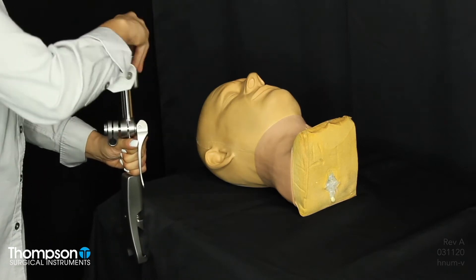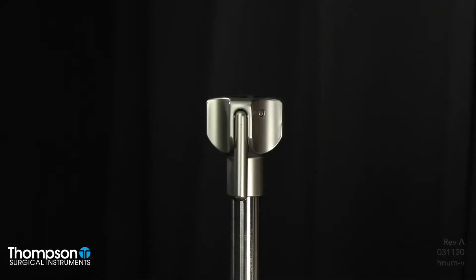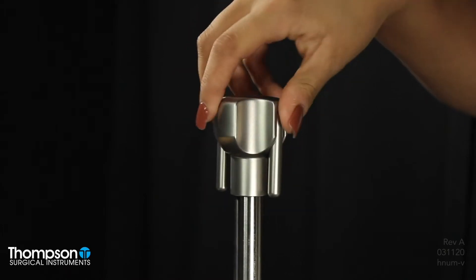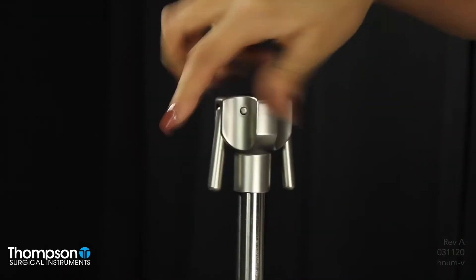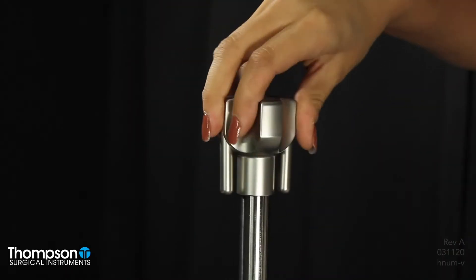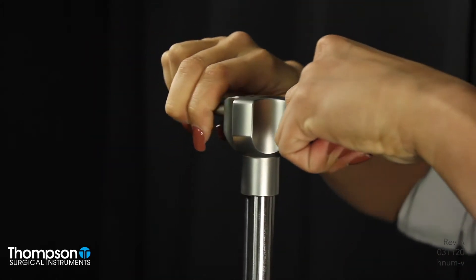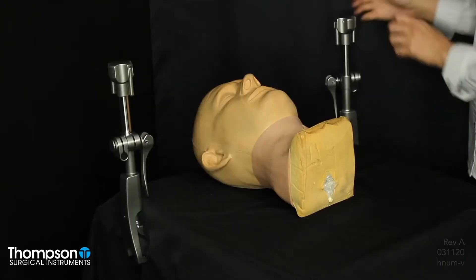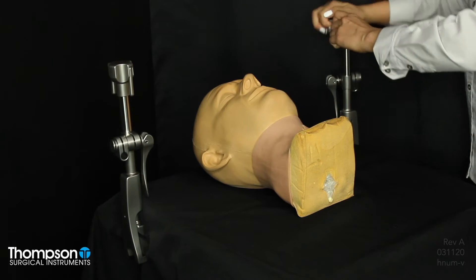We will first begin by attaching the Elite rail clamp to the OR bed rail. Open the rail clamp's jaw by turning the top knob counterclockwise and turn the knob clockwise to tighten. Utilize the hanging handles for additional leverage as needed. Repeat with the second Elite rail clamp on the opposite side of the table.